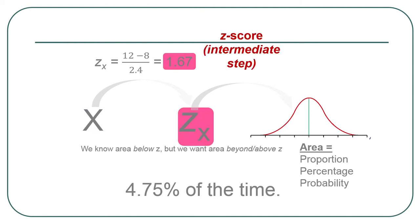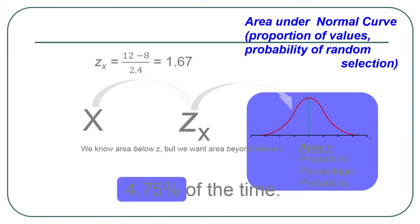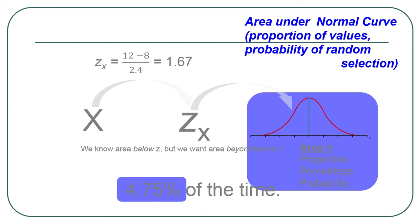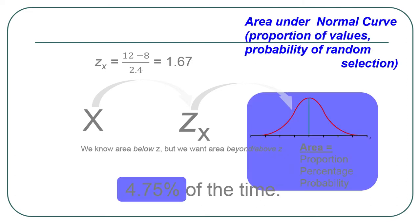These are z-scores. That's the intermediate step, and then these are the probabilities, proportions, areas under the curve, that kind of thing. So those are the three kinds of things that are involved. They're very different kinds of things. It's important to keep them straight.